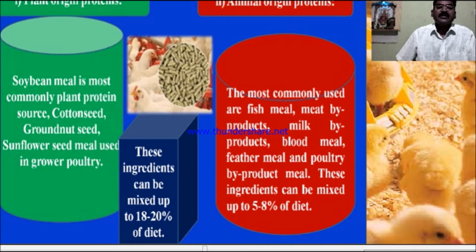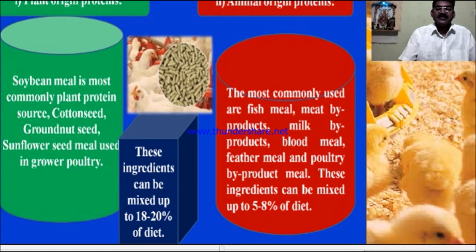The second is animal origin protein. The most commonly used animal origin proteins are fish meal, meat byproducts, milk byproducts, blood meal, feather meal, and poultry byproduct meal. These ingredients can be mixed up to 5 to 8 percent of the dietary level.